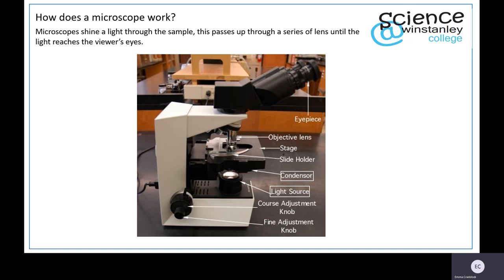The light source shines through a condenser, which can be used to control the amount of light passing through your sample. If it's bleached and you can't see anything but bright white light, you can close it and let less light through. If it's too dark you can open it to let more light through.